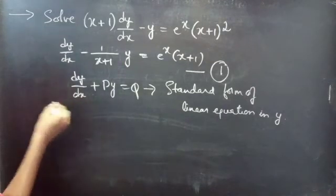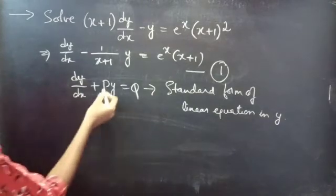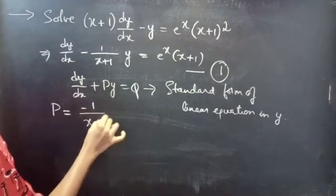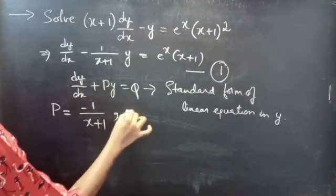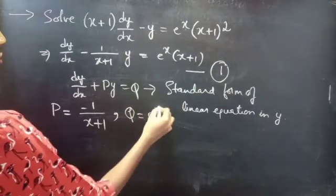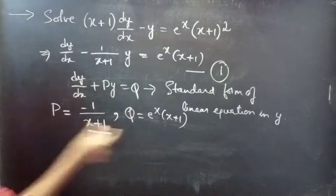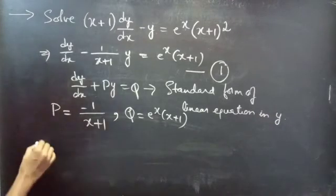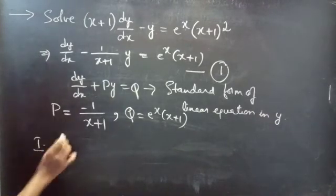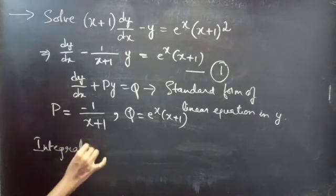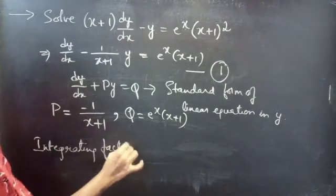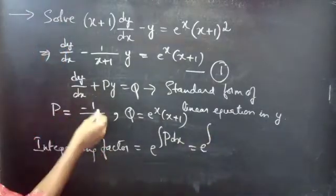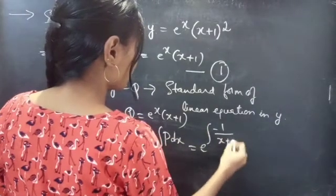Now we will get P and Q by comparing the two equations. Then, P = −1/(x + 1), which is a function of x, and Q = e^x (x + 1), also a function of x. Here P and Q are functions of x. Now let's find the integrating factor. We know that the integrating factor is given by e^(∫P dx) = e^(∫ −1/(x+1) dx).